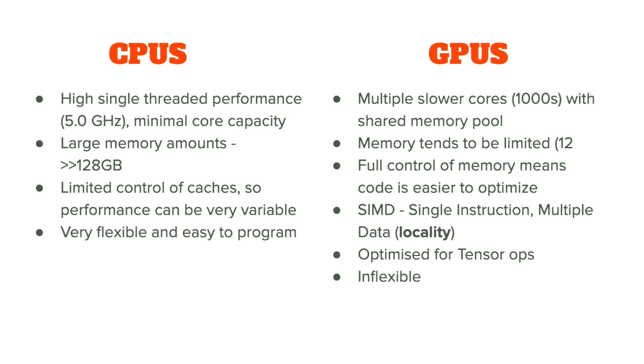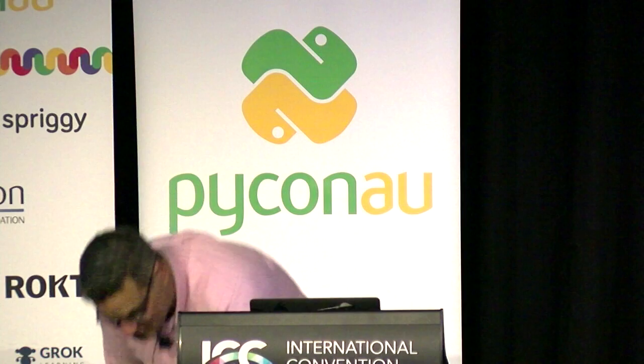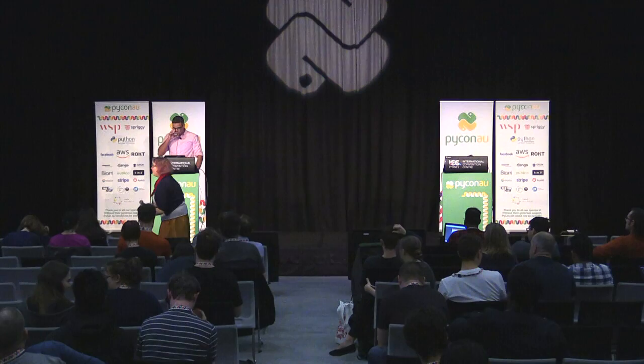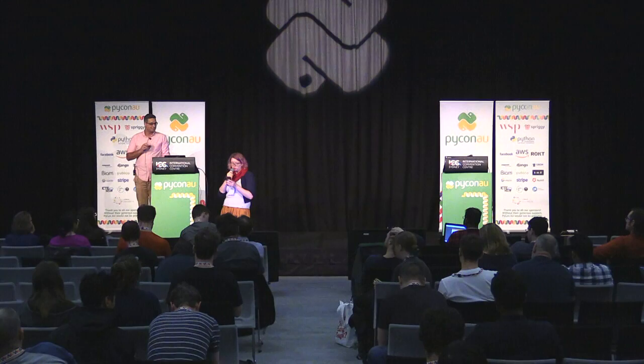To summarize: CPUs have high single-threaded performance with large amounts of memory. They're very flexible and easy to program. GPUs have multiple slower cores with much more limited memory, optimized for tensor operations. You can get incredible improvements, but they're much more inflexible. It all depends on what's good for you.